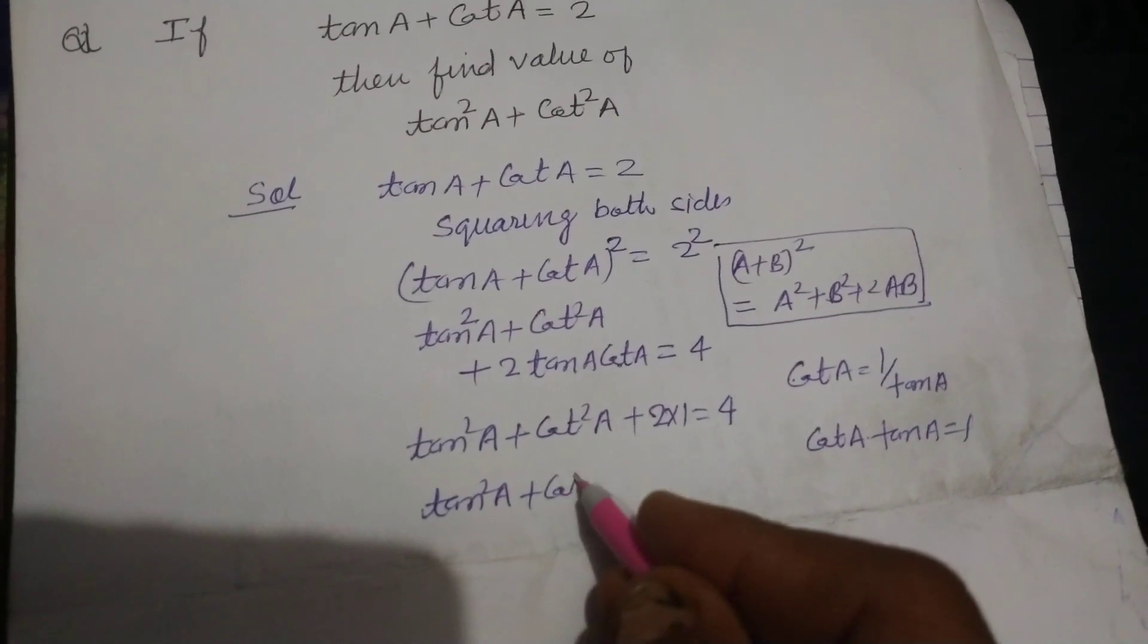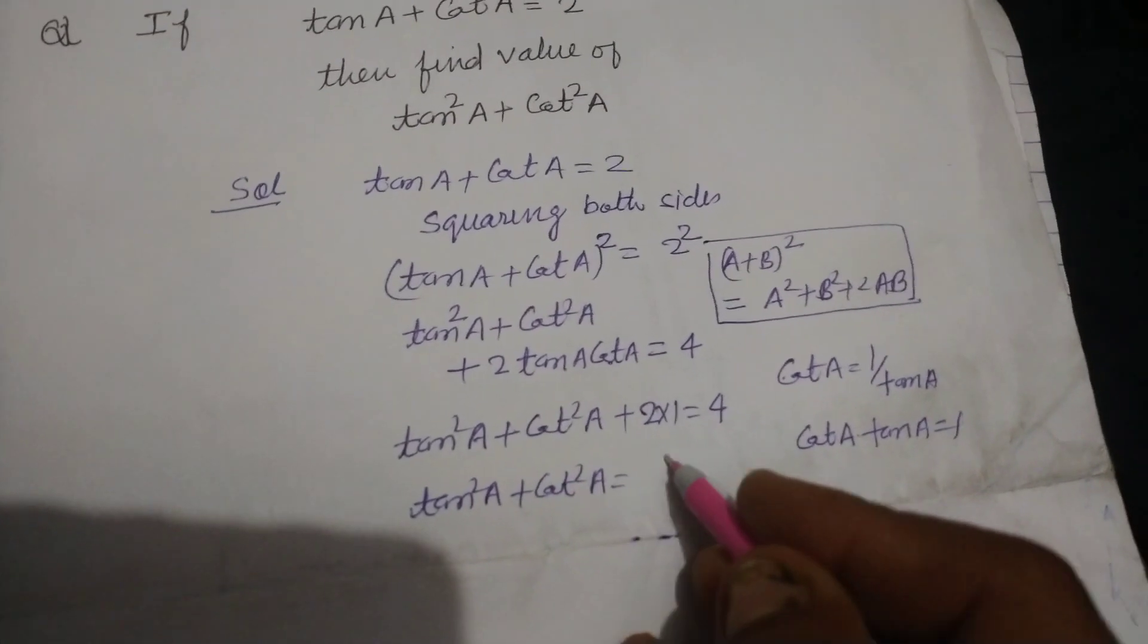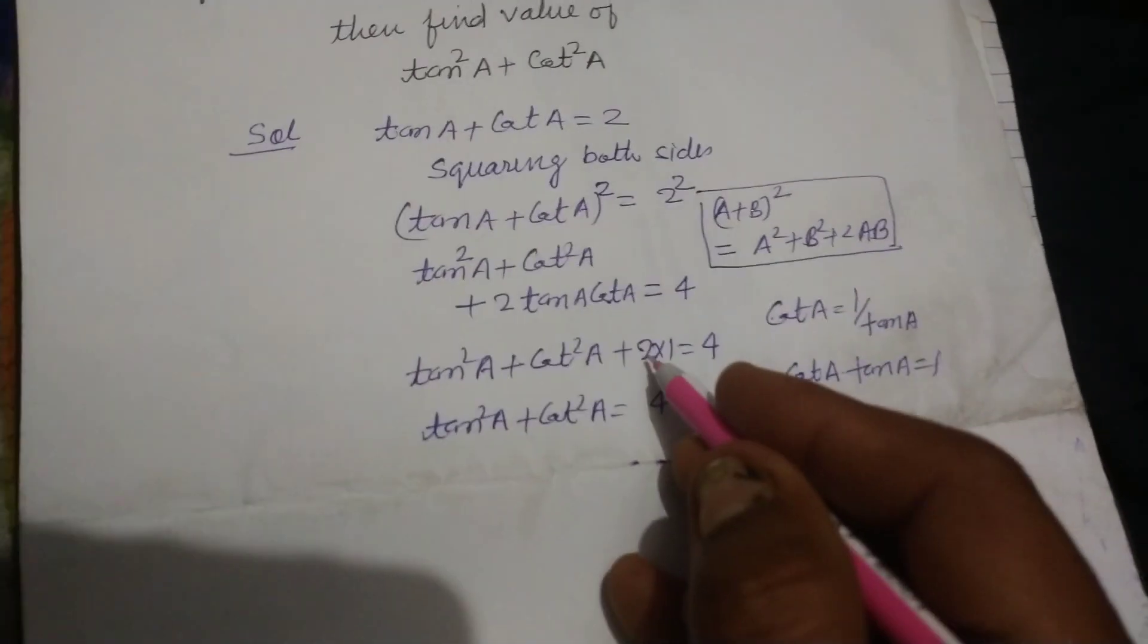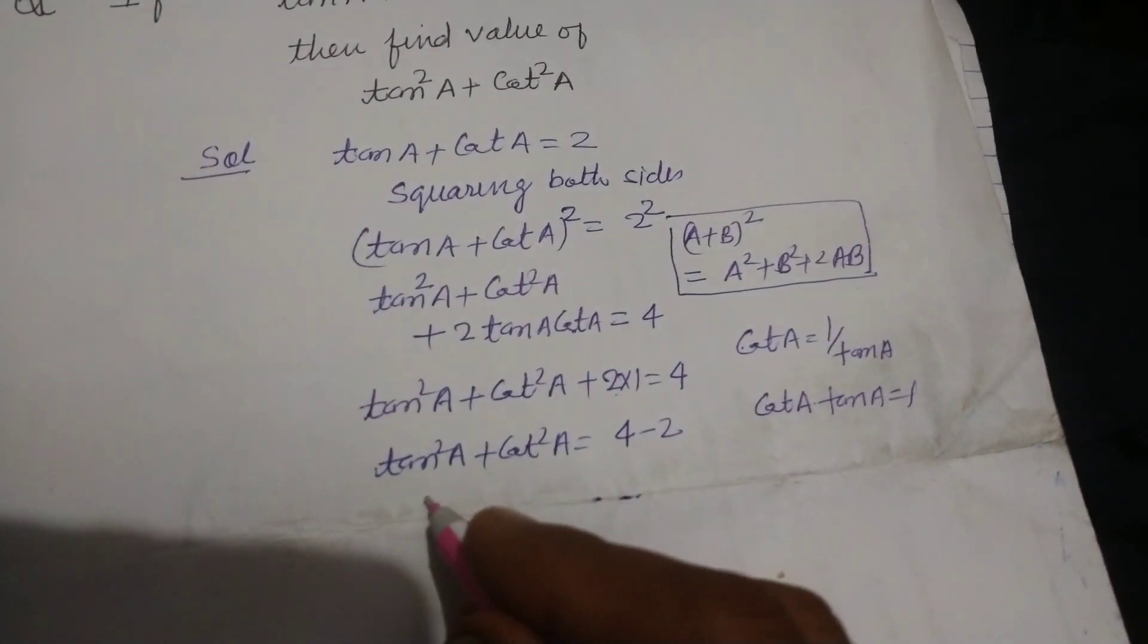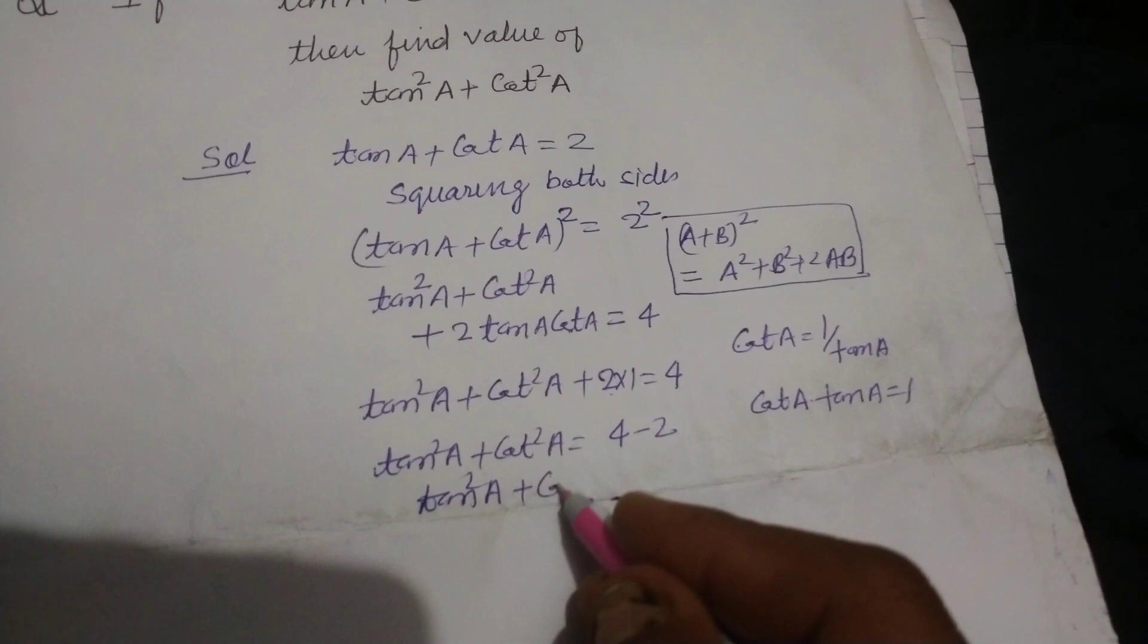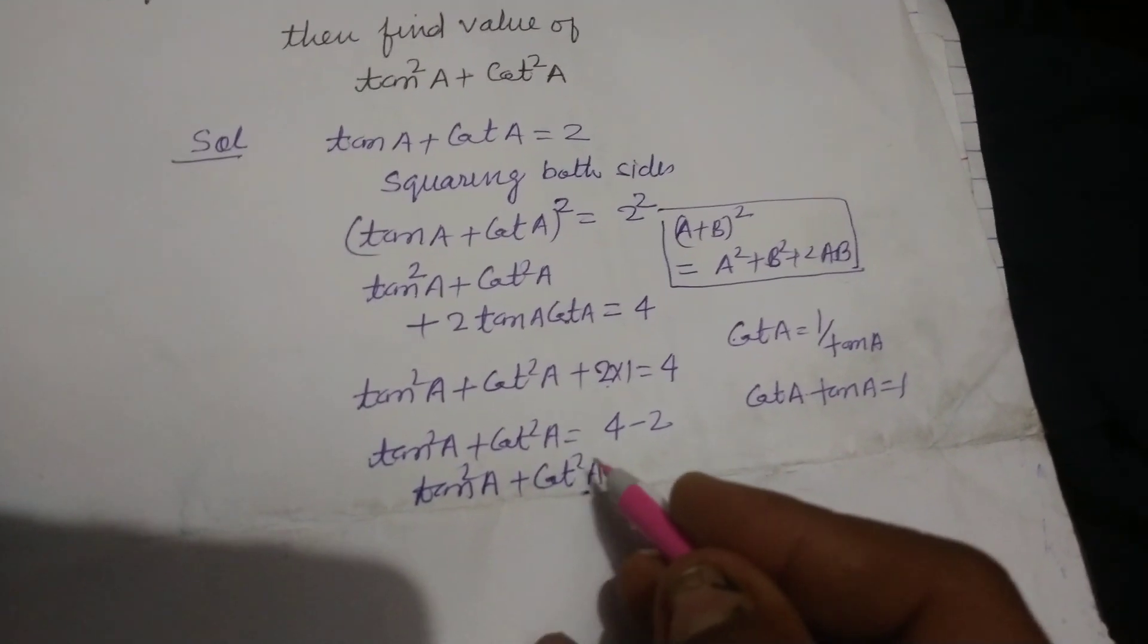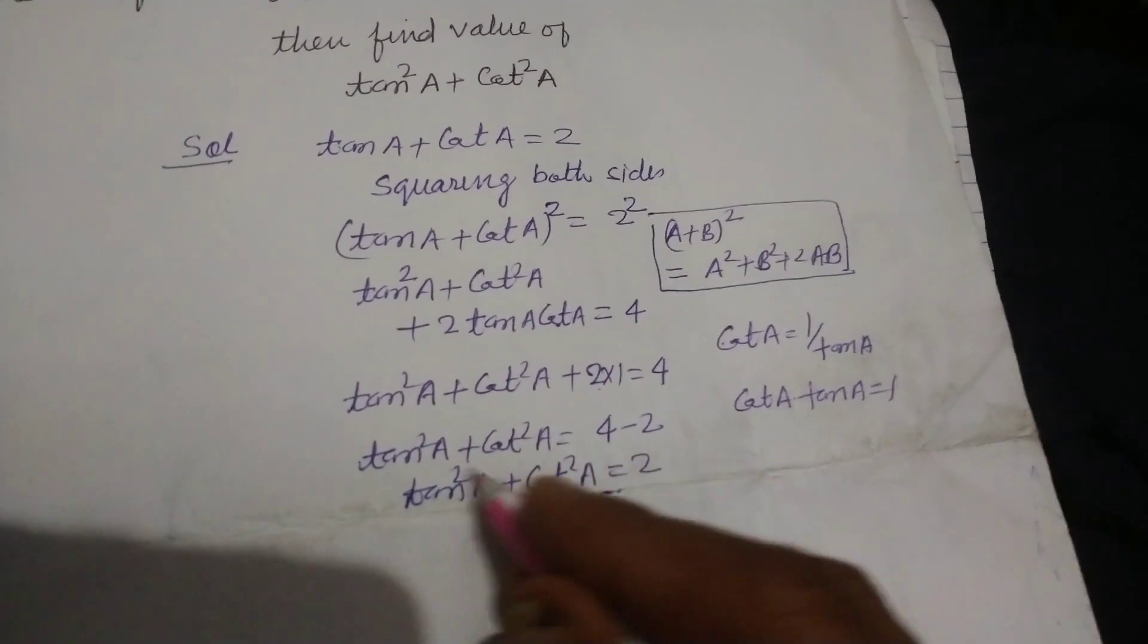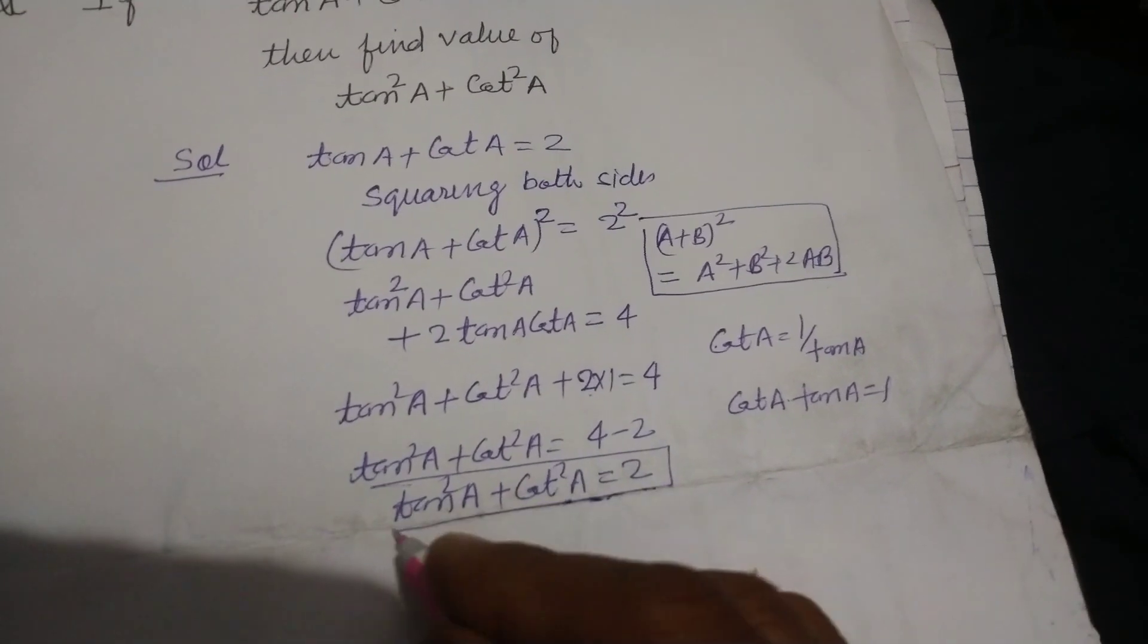Tan squared A plus cot squared A equals 4 minus 2. We bring 2 towards 4, so it becomes negative on side changing. So tan squared A plus cot squared equals 2.